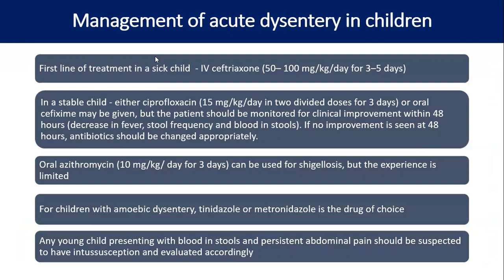Management of acute dysentery in children: first line in a sick child is IV ceftriaxone 50–100 mg/kg/day for 3–5 days. In a stable child, either 15 mg/kg in two divided doses for three days or oral cefixime may be given, monitoring for clinical improvement within 48 hours — decrease in fever, stool frequency, and blood in stool. If no improvement at 48 hours, change antibiotics. Oral azithromycin 10 mg/kg/day for three days can also be used for Shigellosis. For amoebic dysentery, tinidazole or metronidazole is the drug of choice. Any young child with blood in stool and persistent abdominal pain should be suspected of intussusception and evaluated accordingly.